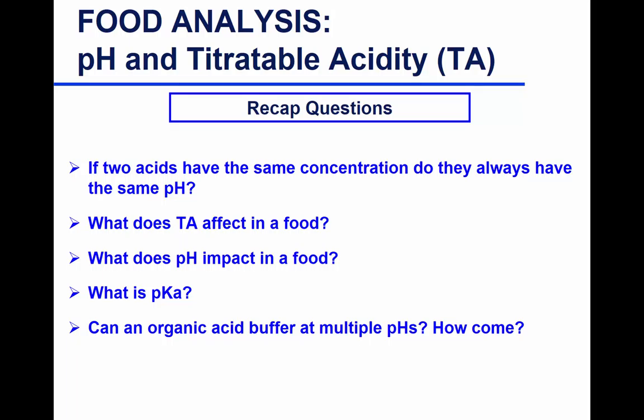What does titratable acidity affect in food? Flavor. And another aspect related to flavor for fruits specifically? Maturity. A higher Brix-to-acid ratio indicates a fruit that is more mature than one with a lower Brix-to-acid ratio. What does pH impact in food? Enzymatic reactions. What else? Microbial growth. Also how to determine the temperature of pasteurization — for example, whether it's an acidic food or a neutral food.